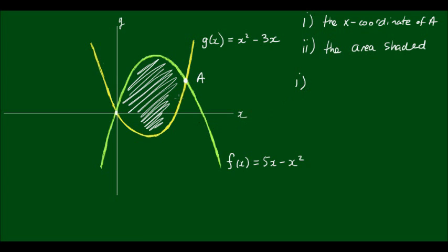Alright, for the first part of the problem, where the curves intersect each other is where they equal each other. So to find point A, I'm going to have to set g is equal to f and solve for x. So if g is equal to f, then x squared minus 3x is equal to 5x minus x squared.